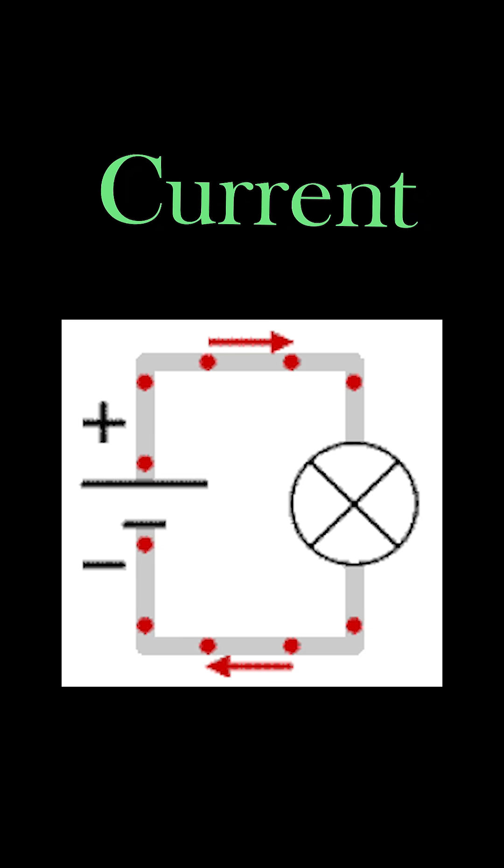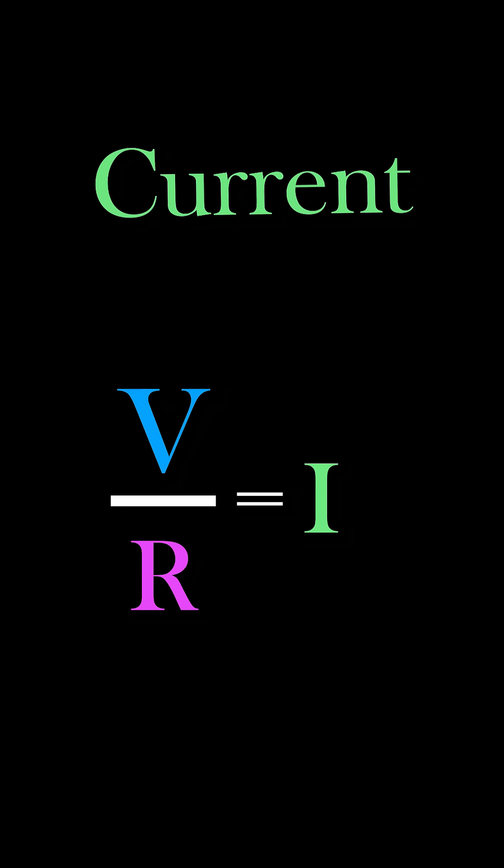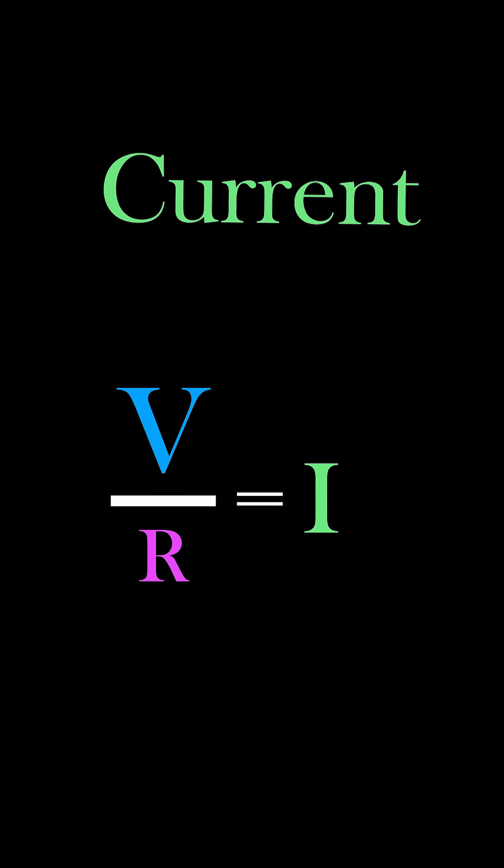Current is the flow of charged particles. The higher the voltage or the lower the resistance, the more current you get.